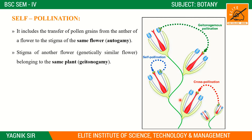Geitonogamy involves pollen transfer to the stigma of another flower, where the flowers are genetically similar and belong to the same plant. That is called geitonogamy.